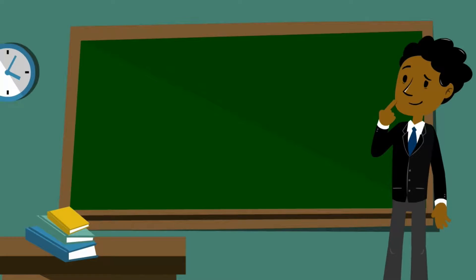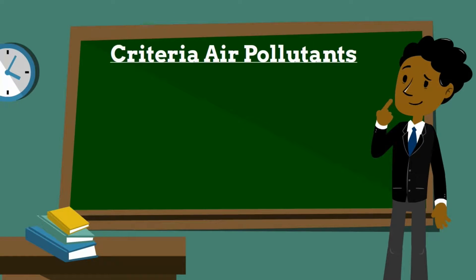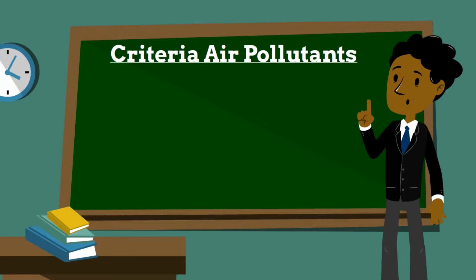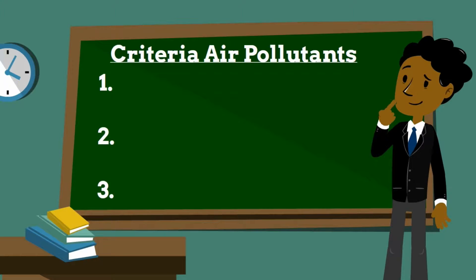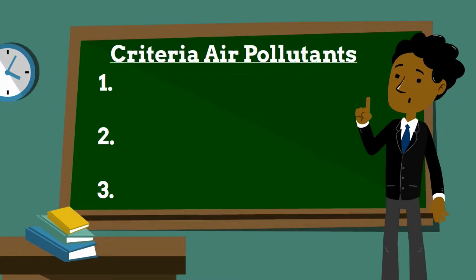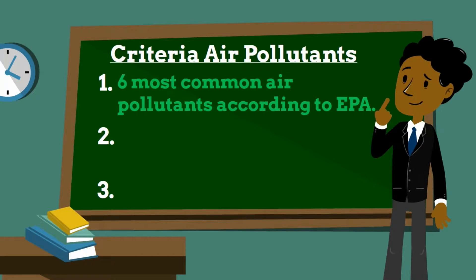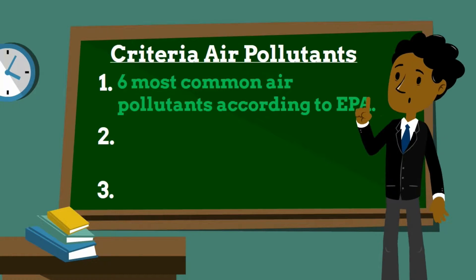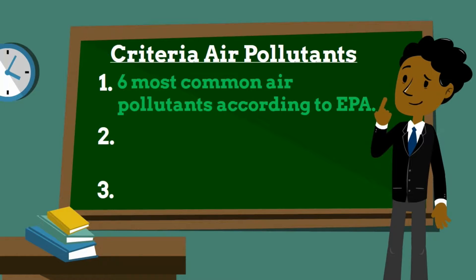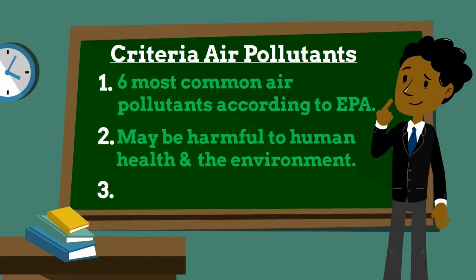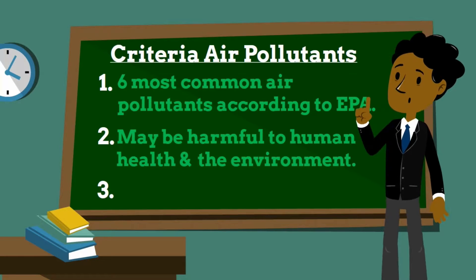Criteria air pollutants are pollutants for which standards are set at a level that protects public health with an adequate margin of safety. This list consists of six common air pollutants, known as criteria air pollutants. These air pollutants can cause smog, acid rain, and other health hazards that may be harmful to humans as well as the environment.